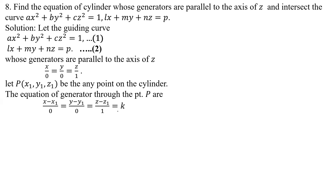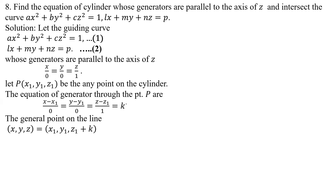We identify the general point. For the general point, we find x, y, z. Considering the first and last parts: 0 is multiplied by k, so we get x = x₁. Similarly, for the second and last parts, we get y = y₁. For the third part, 1 is multiplied, so we get z = z₁ + k.